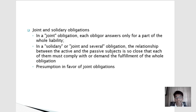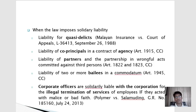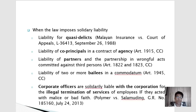In the following instances, solidarity is assumed. First, liability for quasi-delicts, particularly under the vicarious liability rule in Article 2180 of the Civil Code — which covers employers for the negligence of employees, teachers or schools for students, and parents or guardians for their children or wards. Second, the liability of co-principals in a contract of agency: any one of two or more principals can be held liable for damages suffered by the agent in carrying out the agency.